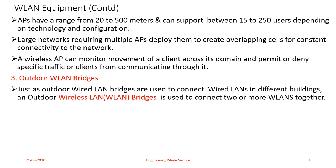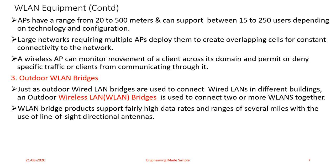Just as outdoor wired LAN bridges were used to connect wired LANs in different buildings, the same is applicable for wireless LAN bridges — they are used to connect two or more wireless LANs together. A wireless LAN bridge can support fairly high data rates and ranges of several miles with the use of line of sight. Outdoor wireless LAN bridges make use of highly directional, line-of-sight antennas to ensure constant connectivity between two different wireless LANs.